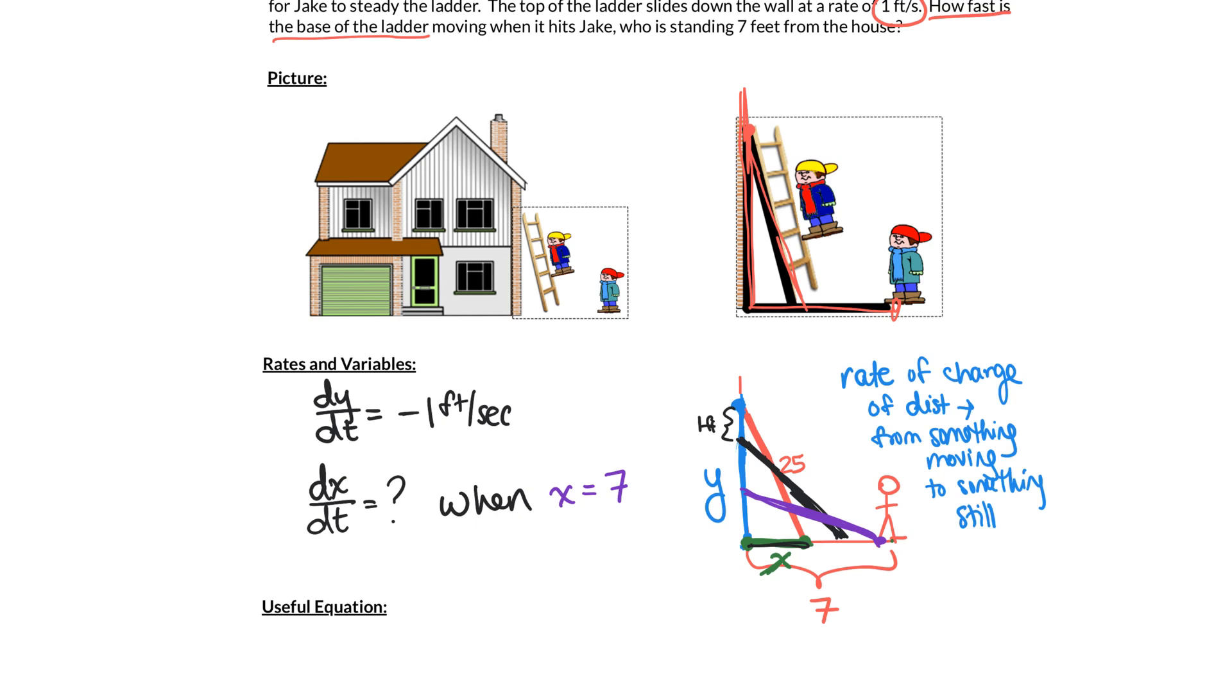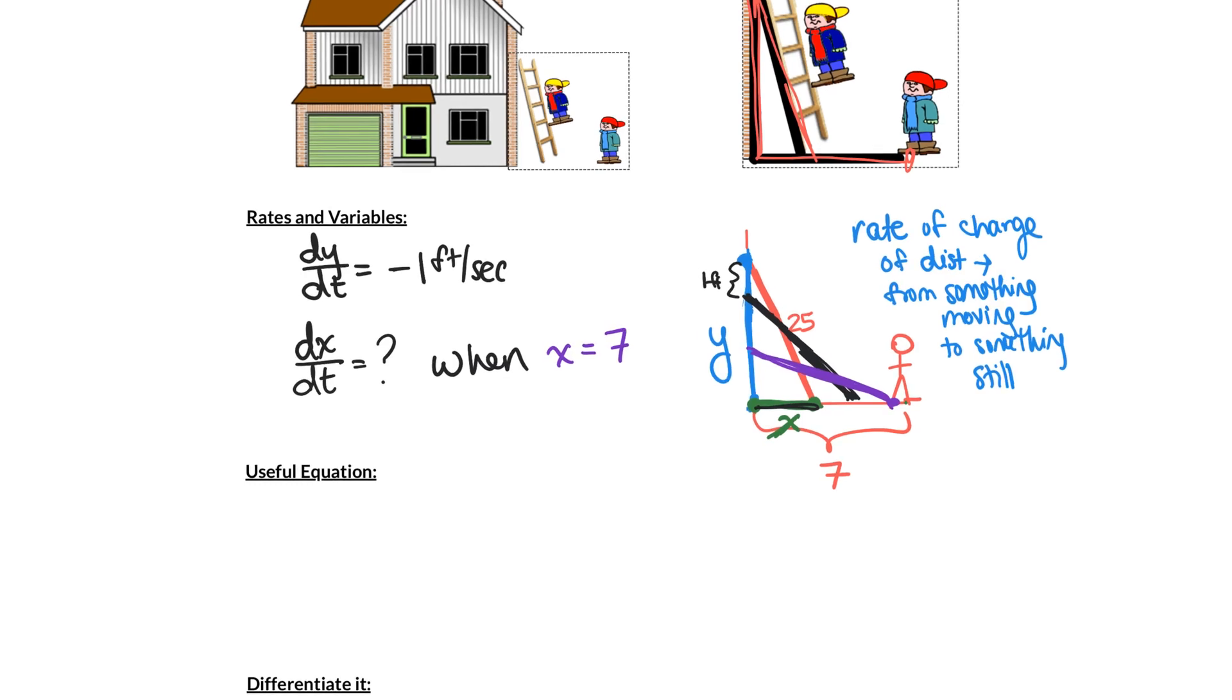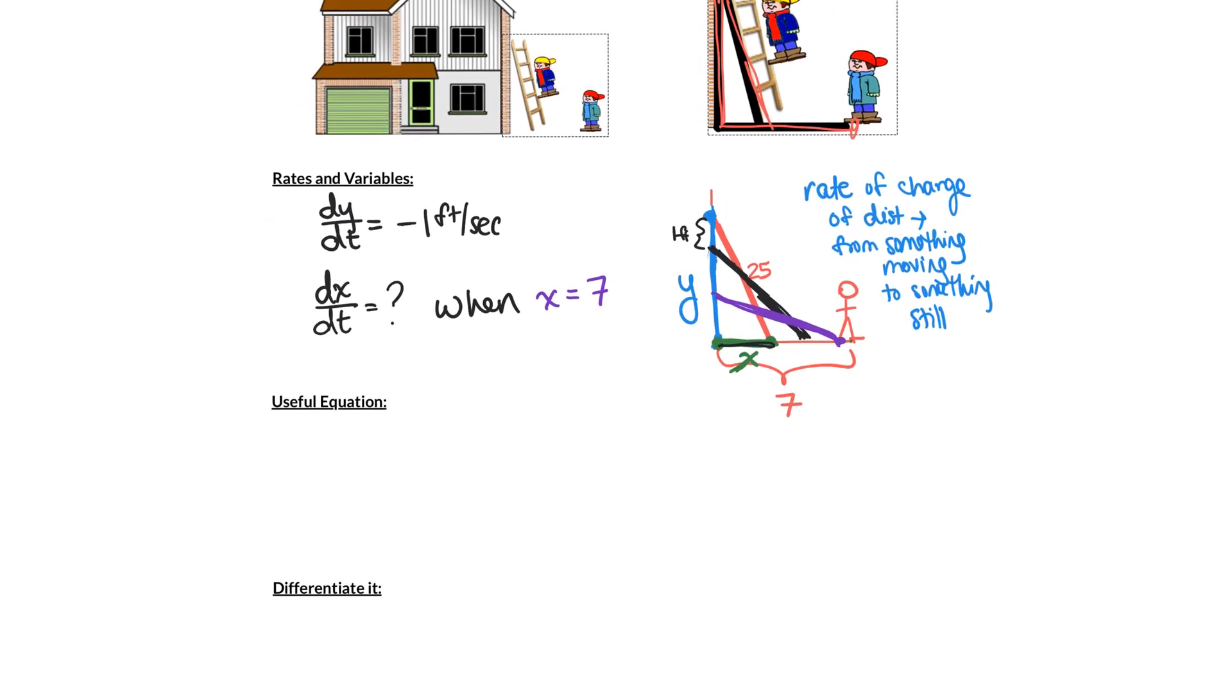So now that we have our rates and when we want to find them and what our variables are going to be, we have our labeled picture. We want to come up with an equation. And the goal here is to come up with an equation that relates x and y, because that's going to relate our two rates of change. So we want an equation that has x and y in it and no other variables. That's the goal. So if I draw a clean version of our picture here, there's our ladder, the ground, and the building, the house. This is y, this is x, this is 25. Can you see what that relationship is going to be? Yeah, it's the Pythagorean Theorem. So we get x² + y² = 25².